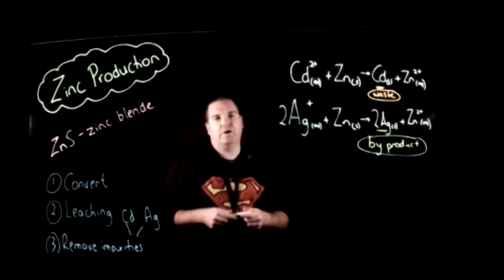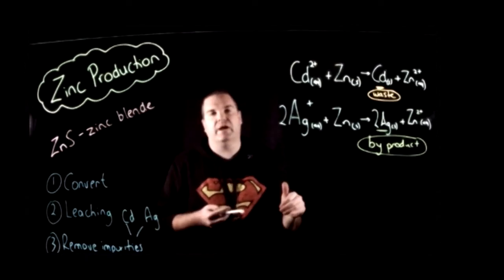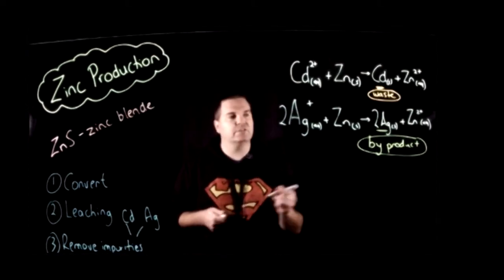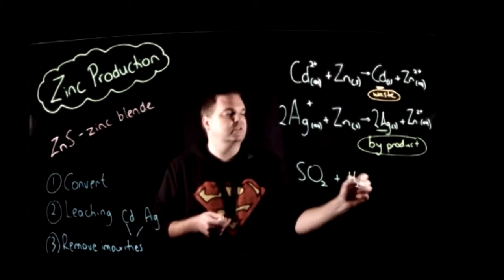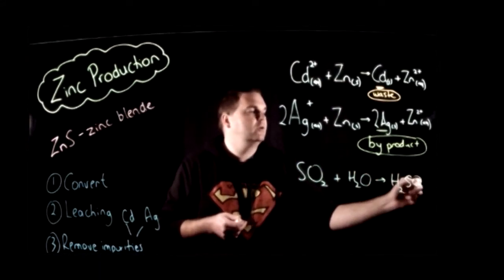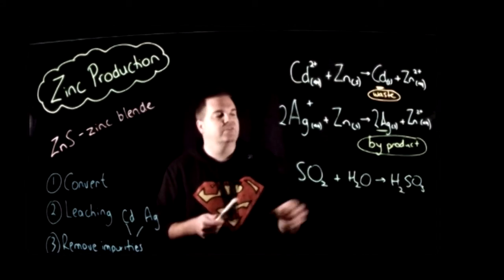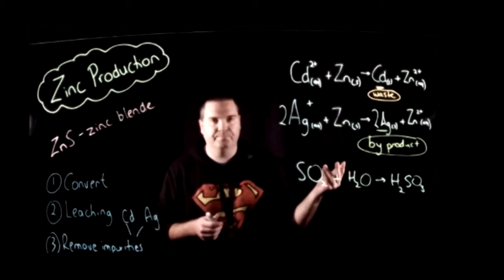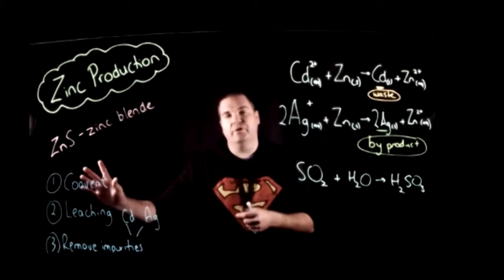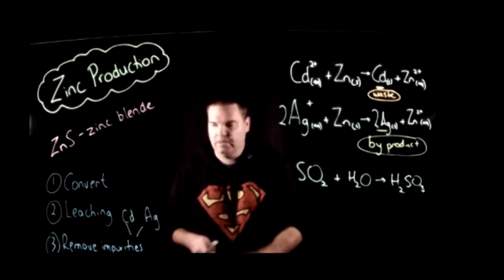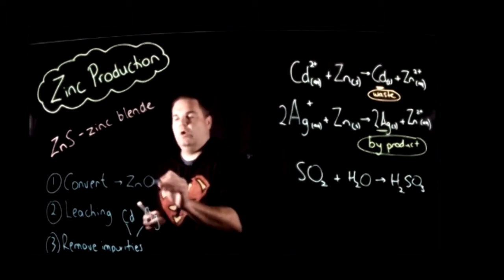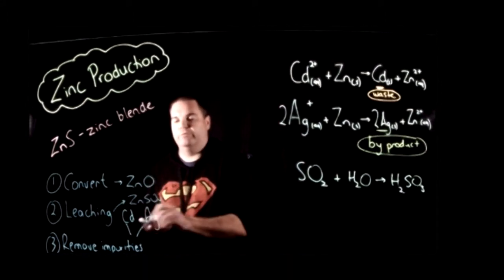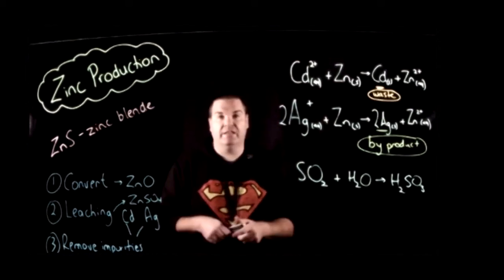One other by-product worth mentioning: going back to that initial roasting in air where we had zinc sulfide plus oxygen — one of the products was sulfur dioxide. That sulfur dioxide can be dissolved in water to give sulfurous acid, which we can use commercially. So the sulfur dioxide or the acid are also by-products because we can use them or sell them for commercial value. So we've converted from zinc sulfide to zinc oxide, then leached it into zinc sulfate, and removed the impurities of cadmium and silver. Now we're ready for the electrolysis part.